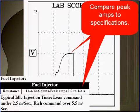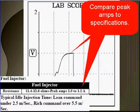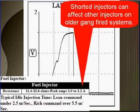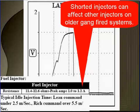Compare the peak amps to specifications. Higher amps are most likely shorted injectors. Shorted injectors can affect other injectors on older gang-fired systems — they all look shorted when it's only one.